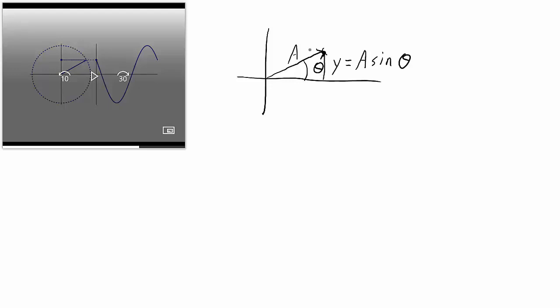So as that angle is changing, and it's changing at a constant rate, the height or the value of y is also going to be changing proportional to the sine of that angle. We can use the symbol omega to represent the angular velocity around the origin here.